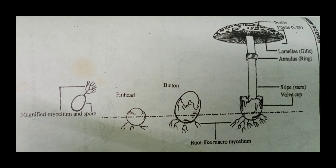These spores are invisible to the naked eye but can be seen under a compound microscope. Such spores vary in shape, size and color. When the spores germinate, they give rise to a thin thread-like growth called the mycelium.